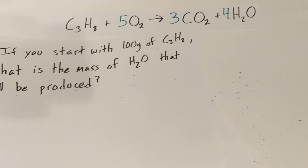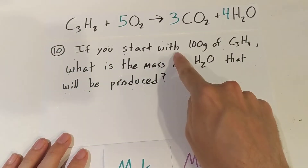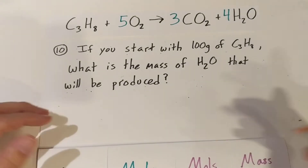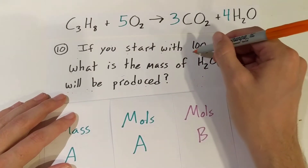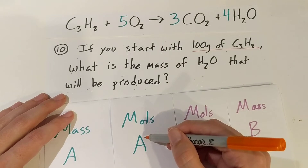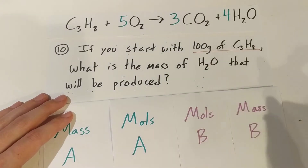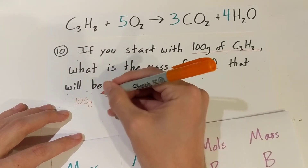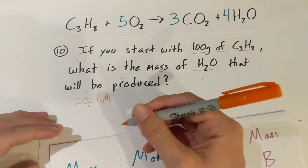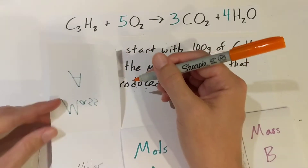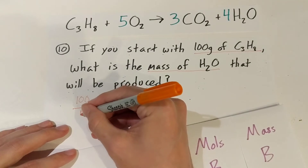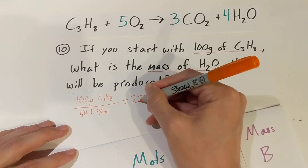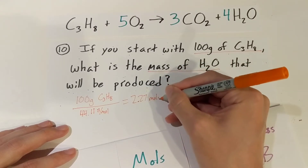Here's our next question, kind of like this one, starting in the same spot. If you start with 100 grams of propane, what's the mass of water that's produced? We need to go from mass to moles of propane, then moles of propane to moles of water, and then convert to mass of water. We start with 100 grams of propane and divide by the molar mass, 44.11 grams per mole, and we get 2.27 moles of propane.